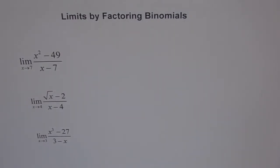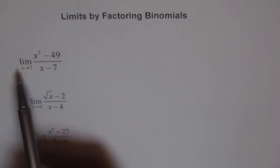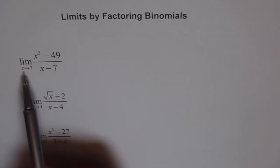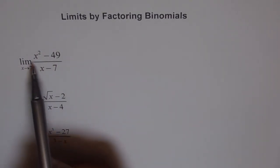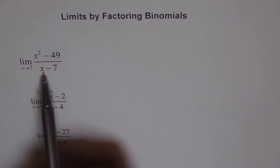Let's try to find limits by factoring binomials. Here are a few examples. Now you'll notice, let's do the first one. It says limit of this function when x approaches 7, the function is x squared minus 49 divided by x minus 7.